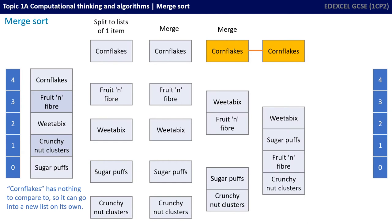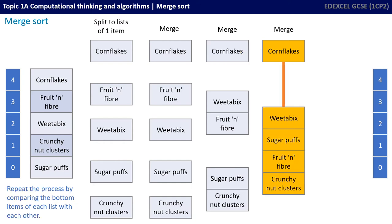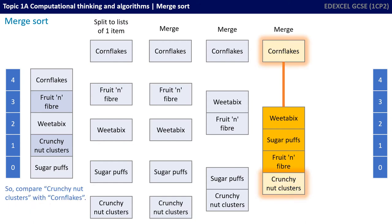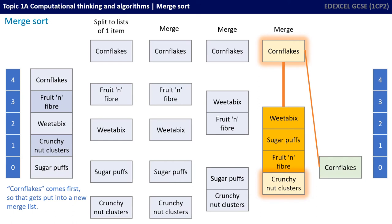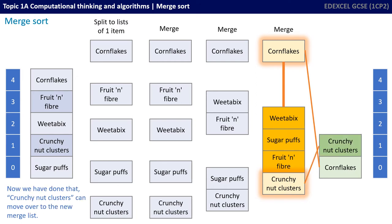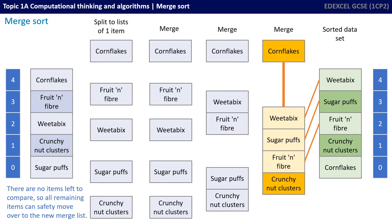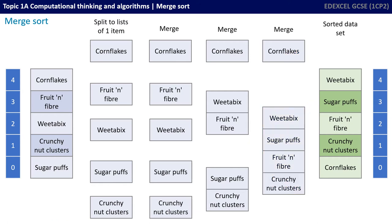Cornflakes is still in a list on its own and has nothing to compare itself to, so it can just go into a new list on its own. We repeat the process by comparing the bottom item of the bottom list with the bottom item of the top list. We compare crunchnut clusters with cornflakes. Cornflakes comes first, so that gets put into a new merged list. Crunchnut clusters can then move over. There are no items left to compare, so all the remaining items can safely move over to the new merged list. And what we've ended up with is the sorted dataset.